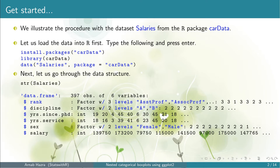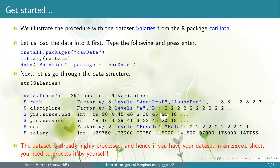Here we use the function str. We can see that the data is available as a data frame and includes six variables: rank, discipline, years since PhD, years of service, sex, and salary. Note that the variables rank, discipline, and sex are factors, not just simple characters. This indicates that the data is already much processed. If you have your dataset in an Excel sheet and you just load it into R, these features will not be available automatically. You will need to do the processing by yourself.